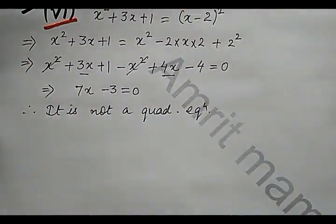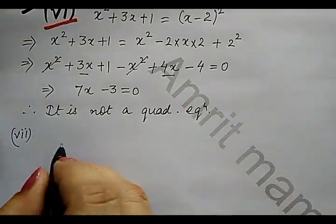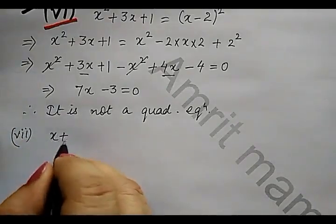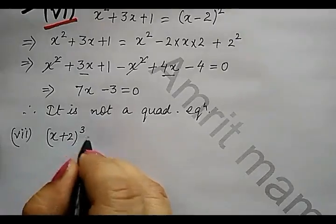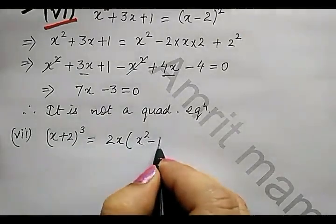So let us try the next part. Part 7th. What it is? This is x plus 2 whole cube equals 2x into x squared minus 1.